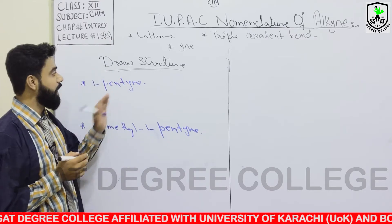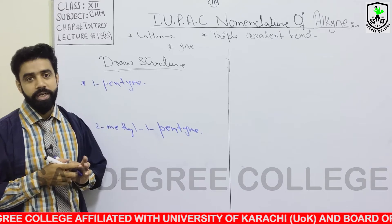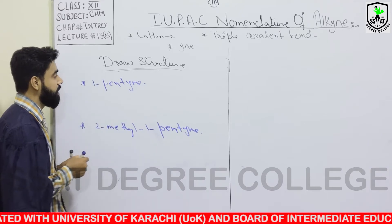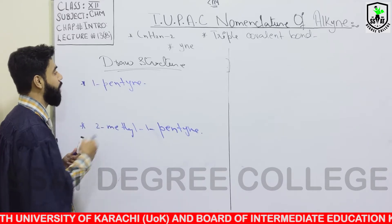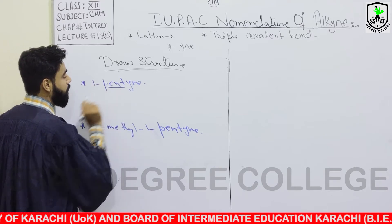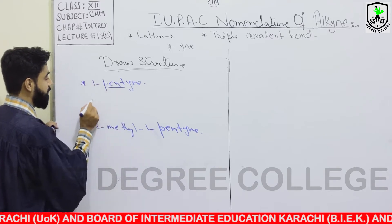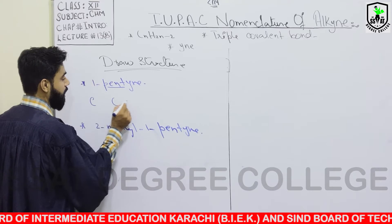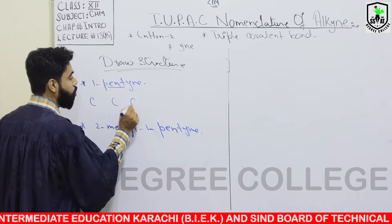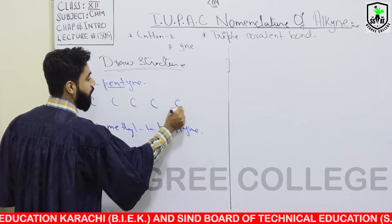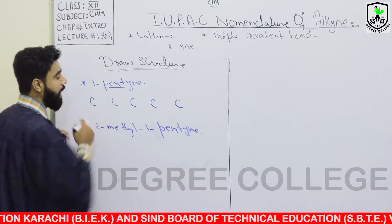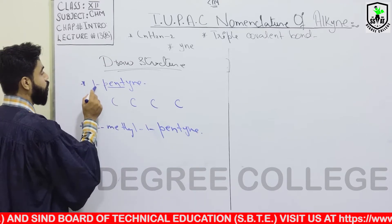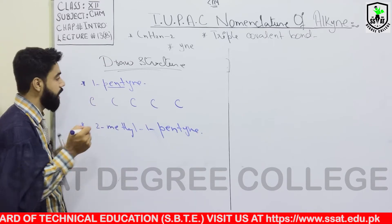The first structure given is 1-pentyne. How do we draw this structure? Pent means the total number of carbons is 5. First, you will put 5 carbons: 1, 2, 3, 4, and 5. So this will be 5 carbons. When you have 5 carbons, the first number indicates a triple covalent bond.